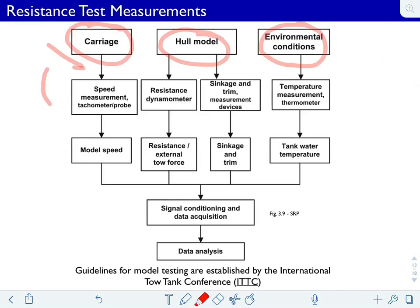From that you can deduce the model speed for the test and that's recorded. For the hull model, you have dynamometers — resistance dynamometers. And if you're doing sailing or yaw tests, you may have a lateral dynamometer as well. You also have sinkage and trim measurement devices. If the boat is allowed free sinkage and/or trim, you want to measure those values, and they are stored.